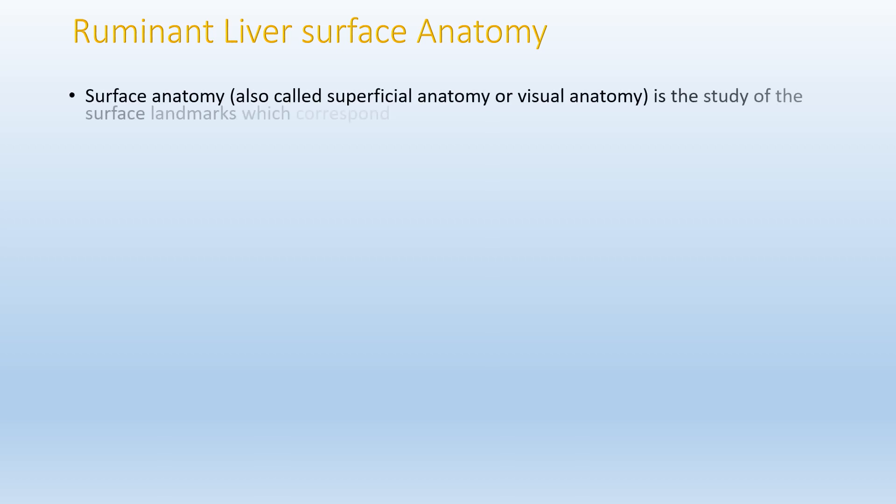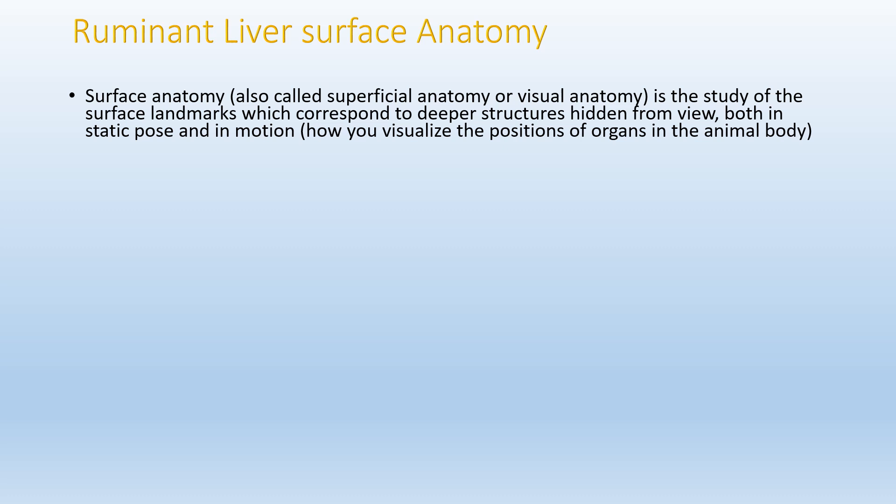Surface anatomy is the study of surface landmarks which correspond to deeper structures hidden from view, both in static pose and in motion. For example, when the animal is breathing and the diaphragm moves cranially and caudally, the position of the liver changes accordingly. In short, surface anatomy describes how to visualize the positions of organs in the animal body.